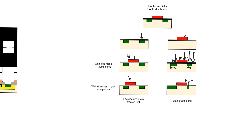Recall that when we use ion implantation to form the source and drain, we have to anneal the wafer afterwards — heating it to a very high temperature, near the melting point of silicon. This means that if the gate had been made of metal, the temperature needed for annealing would melt all the transistor gates. So why do we have to make the transistor gates first? Because otherwise we have a non-self-aligned process with very high sensitivity to misalignment. That is why we have to create MOSFET gates using polysilicon.